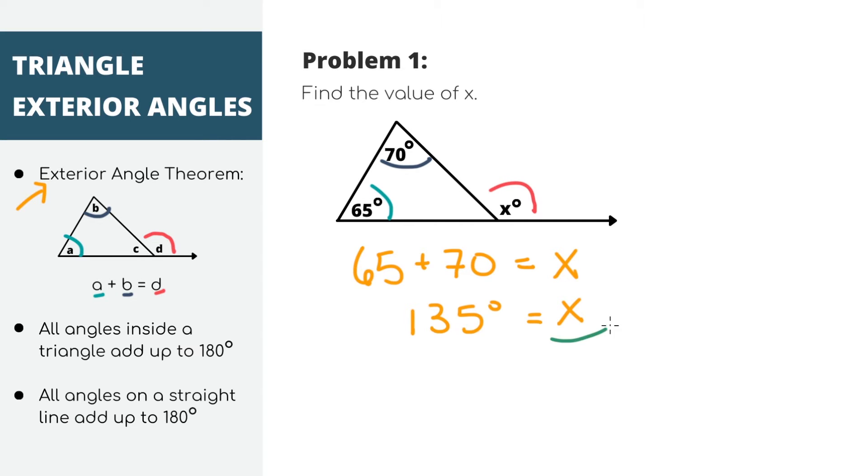I also think it's important not to blindly memorize theorems because what happens if you can't think of this one specific theorem out of all of the 50 random theorems you're supposed to memorize? Well, you just have to remember these two basic facts about triangles and lines. All of the angles inside of a triangle add up to 180 degrees and the angles that make up a straight line add up to 180 degrees.